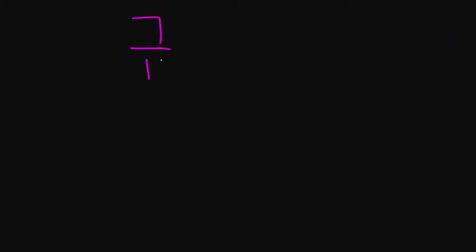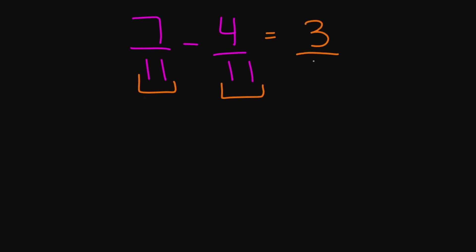Let's try 7 over 11 minus 4 over 11. My denominators are the same, so I'm going to subtract my numerators. 7 minus 4 is going to equal 3, over 11. My final answer is 3 over 11.